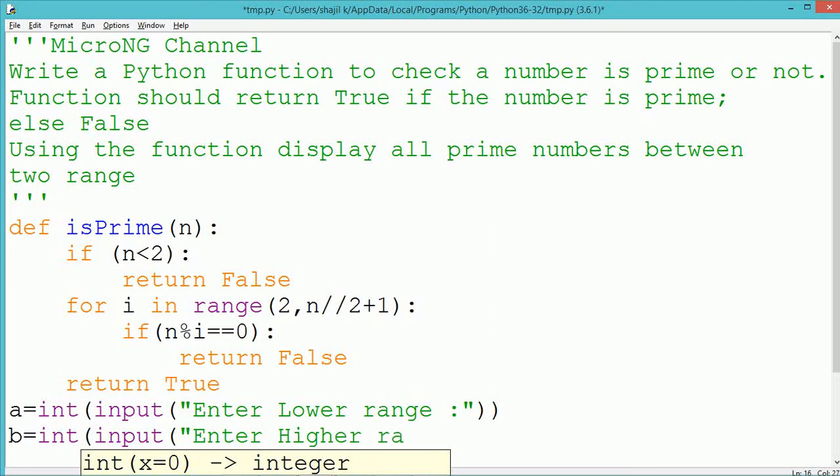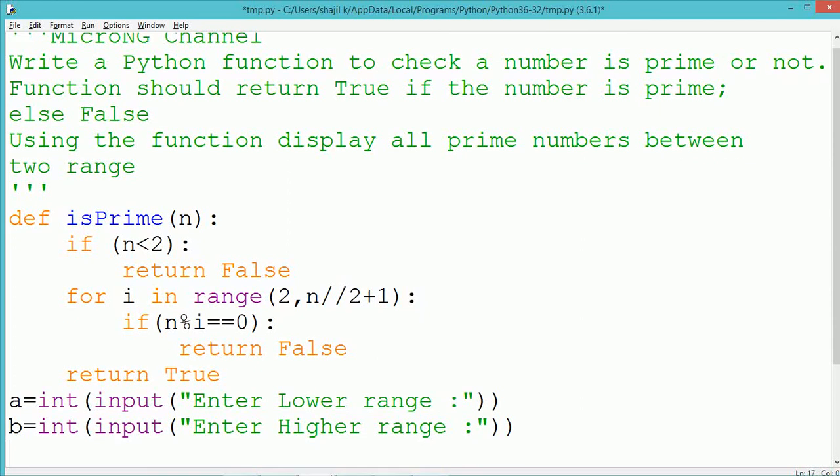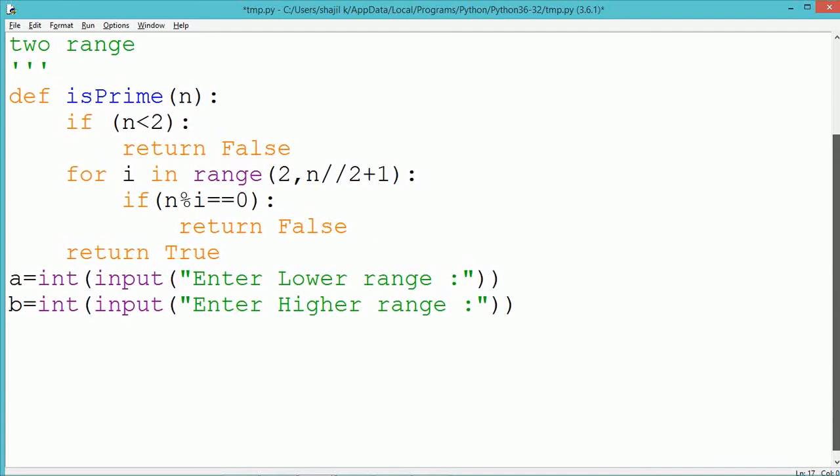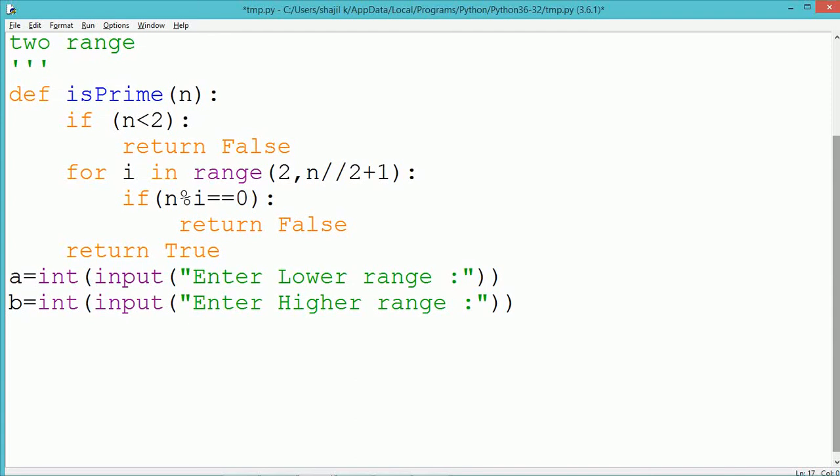By dividing n by a set of values 2, 3 up to half of the number. If it gets divisible by any of the number, we return the value false to indicate that the number is not a prime number. After the division process, we return the value true to indicate that n is a prime number.